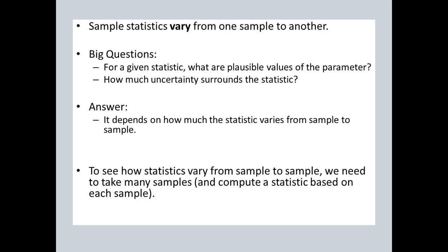With that table that's on the previous slide, we've kind of established that sample statistics vary from one sample to another. You don't get the same thing every time. So the two big questions, which in a way are kind of the same question: if there was a way to quantify how much uncertainty surrounds the statistic, then you'd be able to get a range of plausible values for the parameter. So that's the thing that we have to do. We have to be able to quantify how much variation there is from one sample to another.